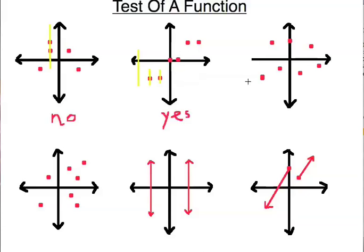Next one — anywhere I draw a vertical line, it's not going to pass through more than one point. So pretty simple: yes, it's a function.